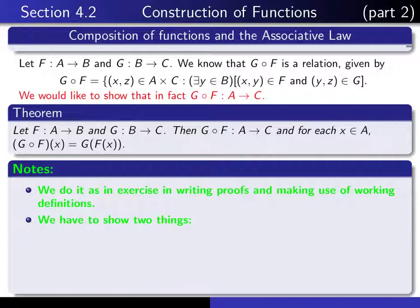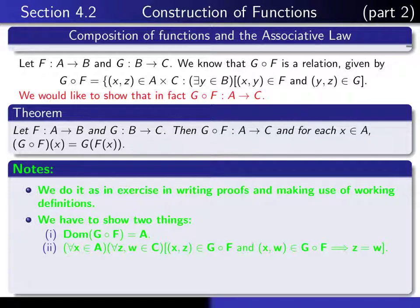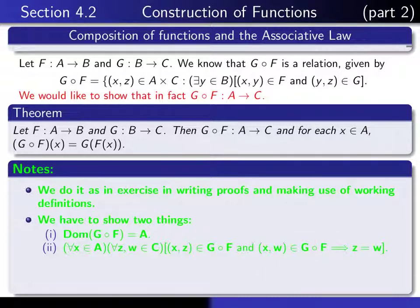In order to prove the theorem, we have to do two things. In order to show that F composed with G is actually a function, we have to show that its entire domain is A, and we have to show that for each argument X it has exactly one image. So that means for every Z and W in C, we have to show that if (X, Z) is in the relation and if (X, W) is in the relation, then Z equals W.